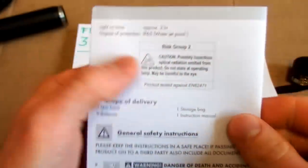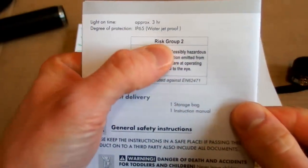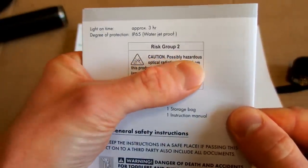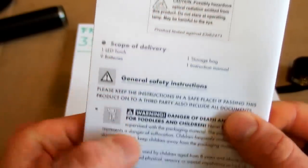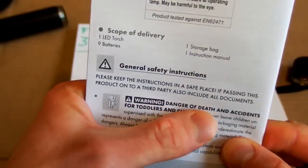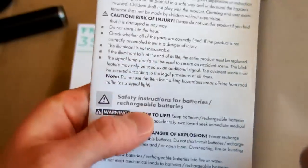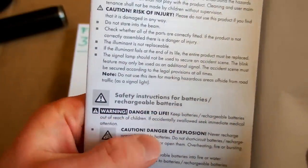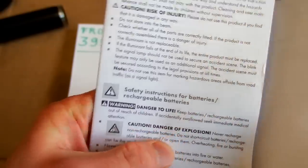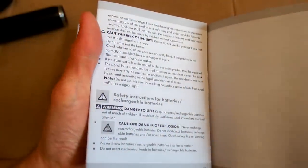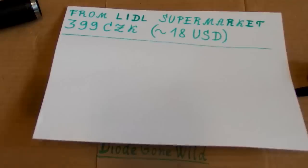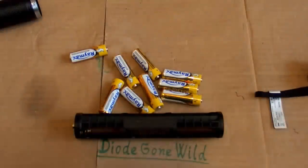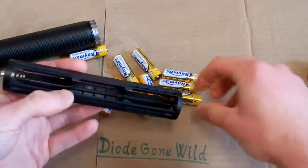Here you can see the manual with a lot of warnings. Risk group 2. Caution. Possibly hazardous optical radiation. Warning. Danger of death. Risk of injury. Danger to life. Danger of explosion. Risk of batteries. Wear protective gloves. So as you can see this flashlight is so dangerous that I shouldn't even use it. But let's test it anyway.